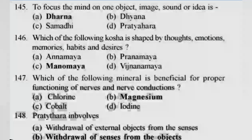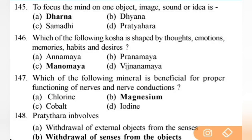To focus the mind on one object, image, sound, or idea is — right answer is A — Dharana — important question. Next: which of the following Kosha is shaped by thoughts, emotions, memories, habits, and desires? Right answer is C — Manomaya Kosha — very important. Next: which mineral is beneficial for proper functioning of nerves and nerve conduction? Right answer is B — magnesium.